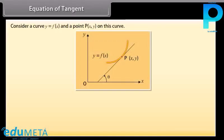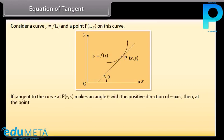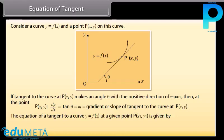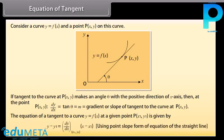Consider a curve Y = f(X) and a point P(X, Y) on this curve. If the tangent to the curve at P(X, Y) makes an angle theta with the positive direction of the X axis, then at the point P(X, Y), dY/dX = tan(theta) = M = gradient or slope of tangent to the curve at P(X, Y). The equation of a tangent to a curve Y = f(X) at a given point P(X₁, Y₁) is: Y − Y₁ = (dY/dX at X₁Y₁) × (X − X₁), using the point-slope form of the equation of the straight line.